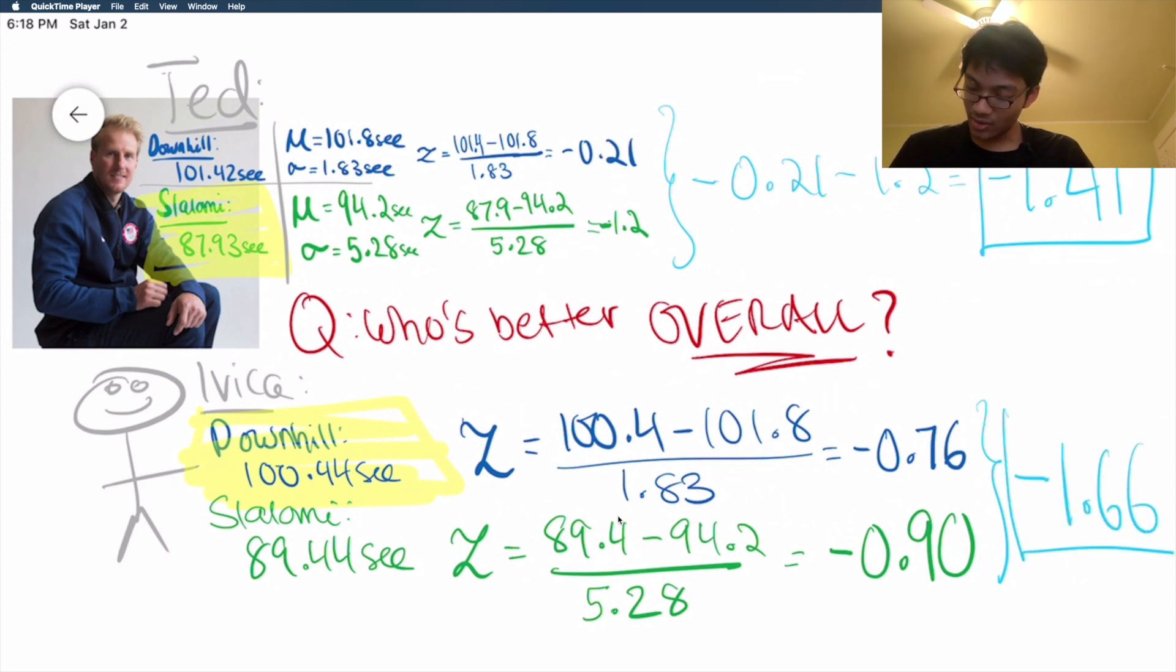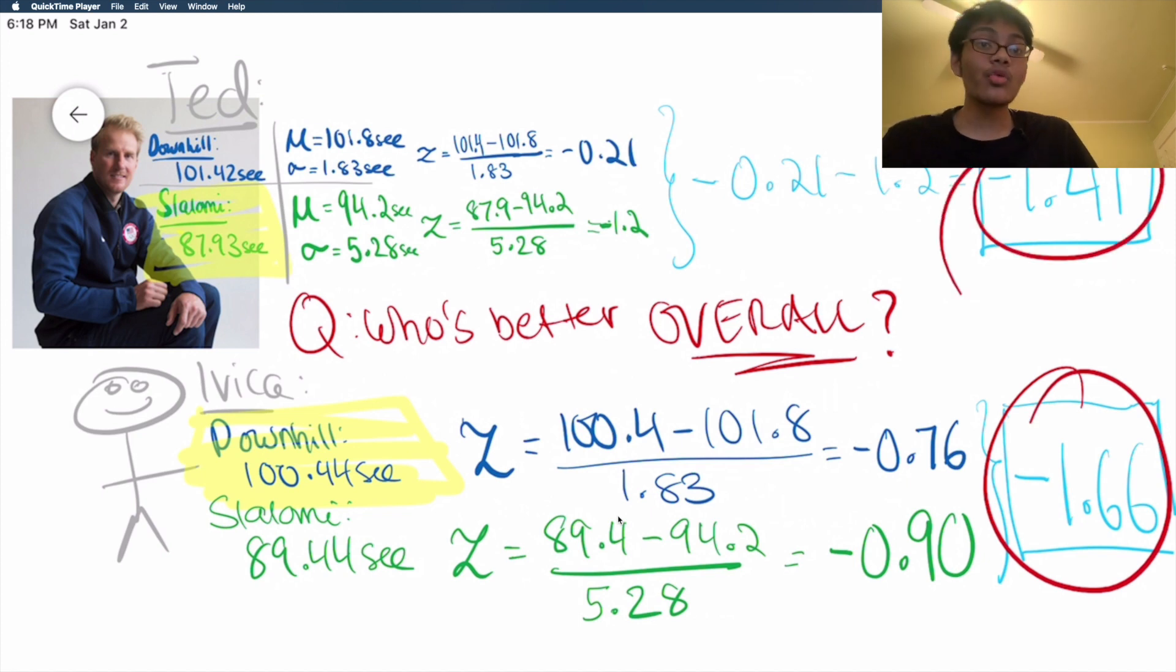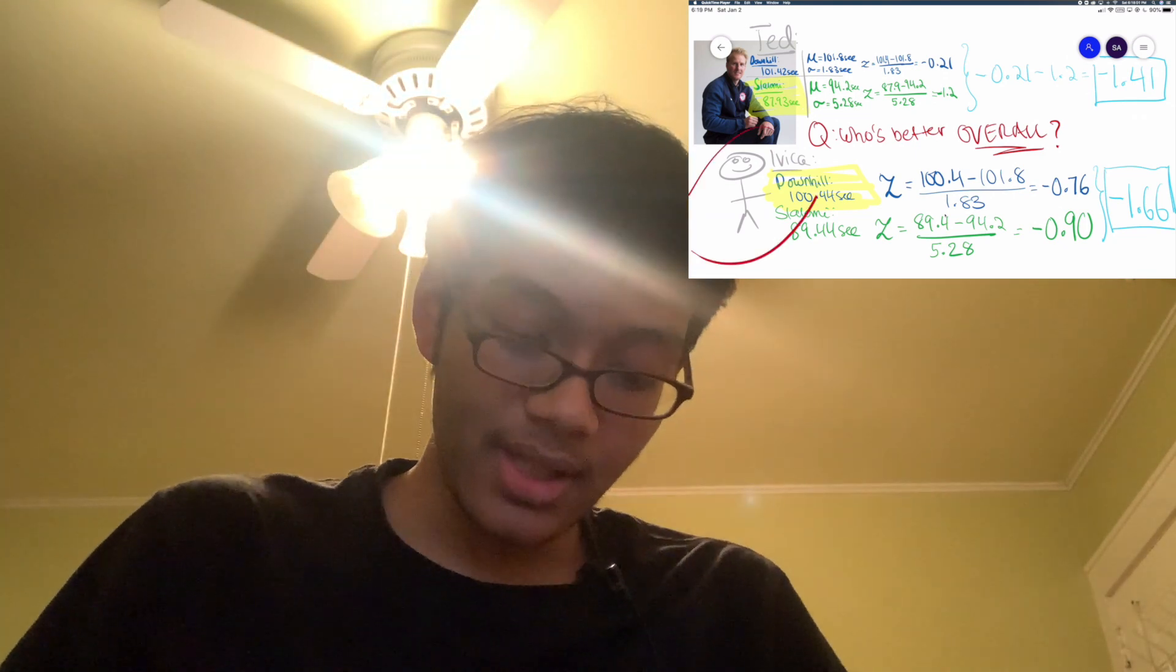Well, whose score is bigger in terms of absolute value? Whose score is farther away from the mean? Whose score is more standard deviations away from the mean? All same ways to interpret the same question. So clearly, Ivica's the winner. His overall score is farther away, is more standard deviations away from the mean. So clearly, Ivica's getting the gold medal, because minus 1.66 is farther away from the mean than minus 1.41. And so we conclude that the winner must be none other than Ivica.